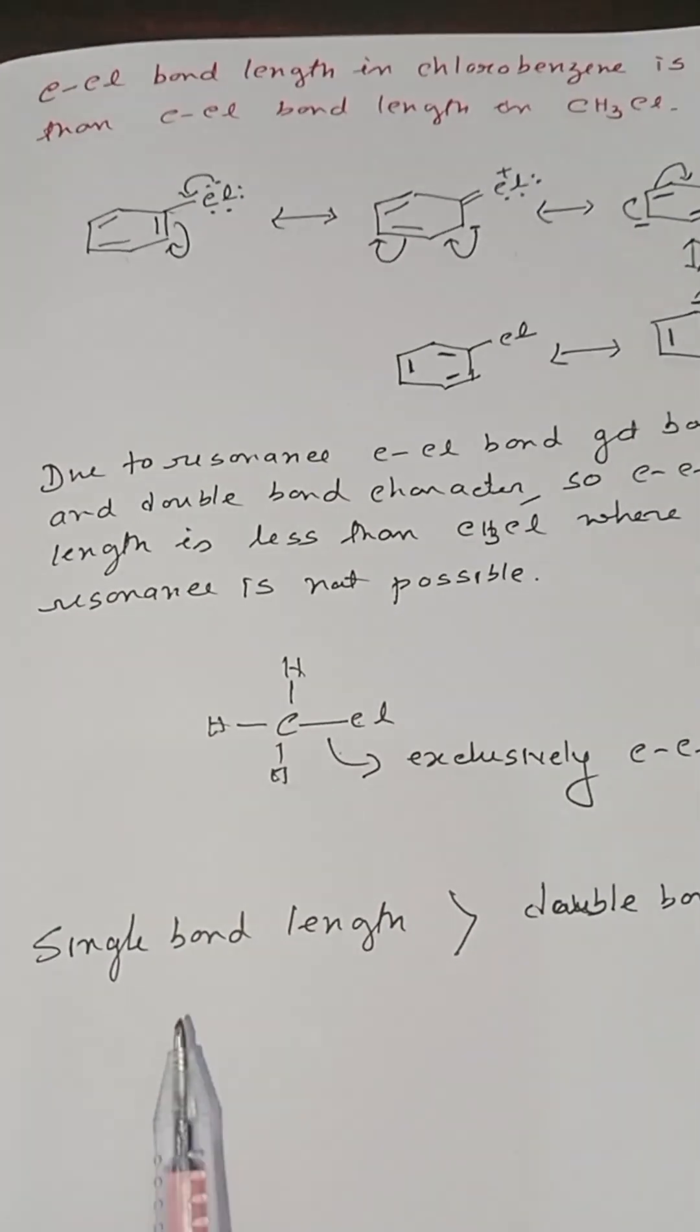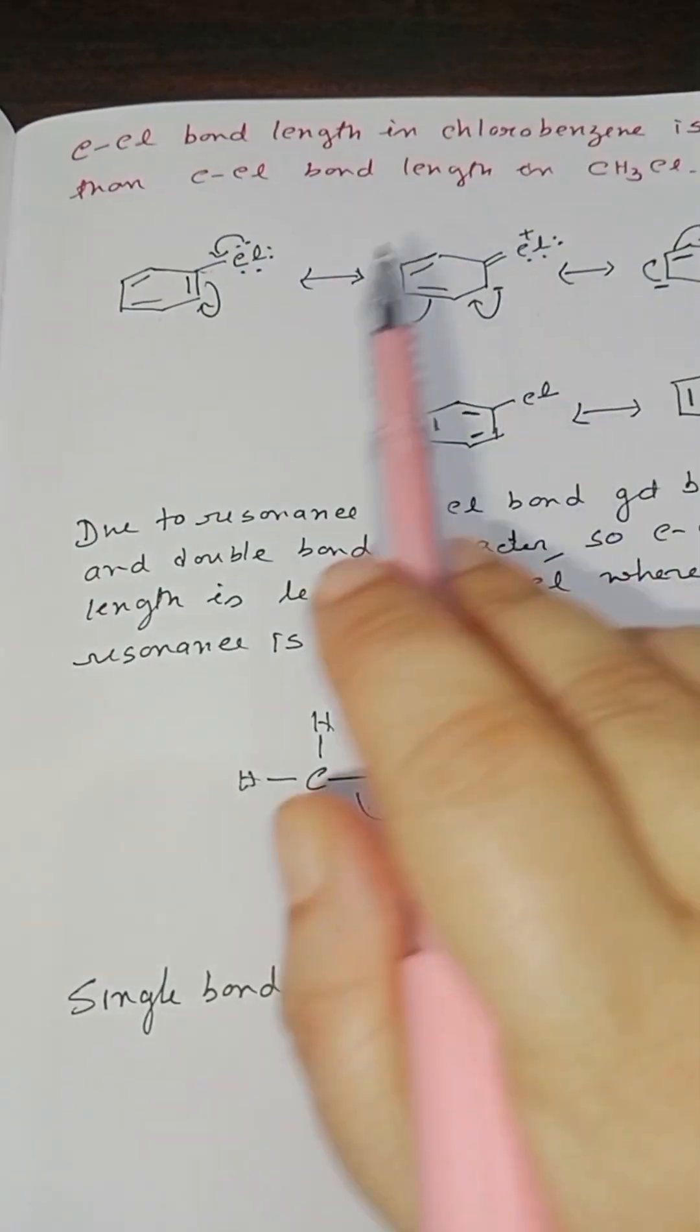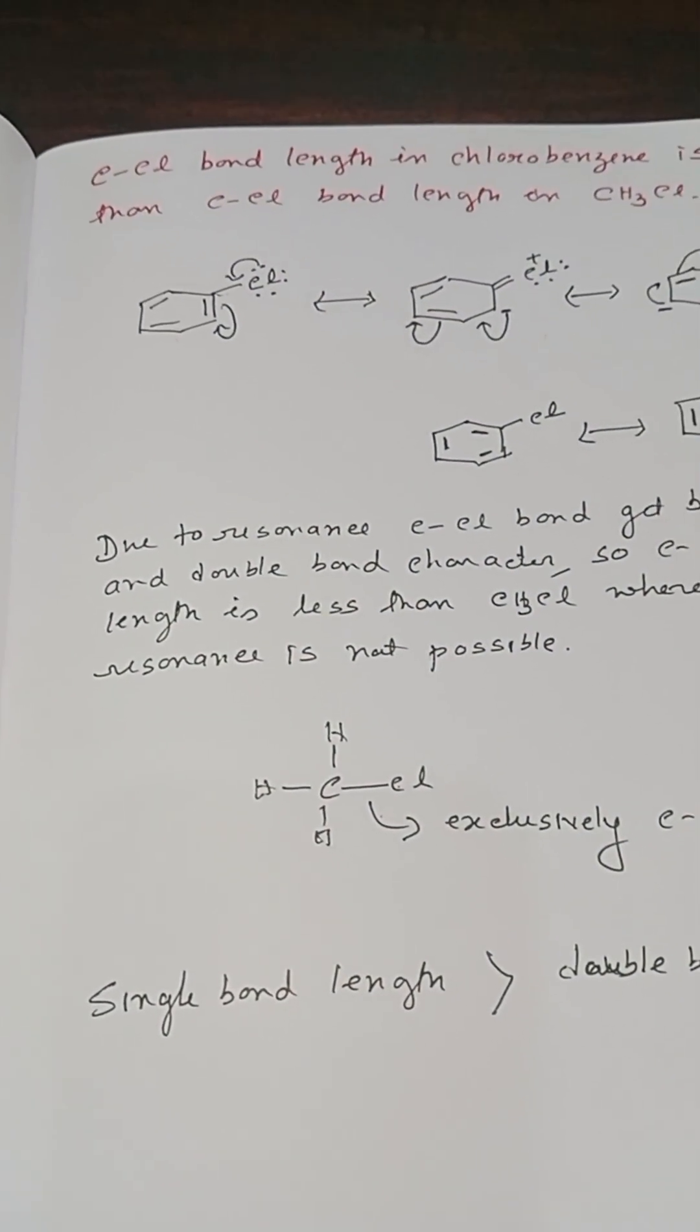And we also know that single bond length is greater than double bond length. So that's why the carbon-chlorine bond length is in between single bond and double bond length.